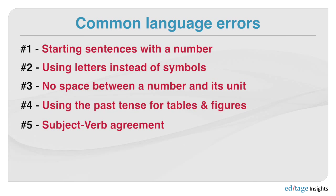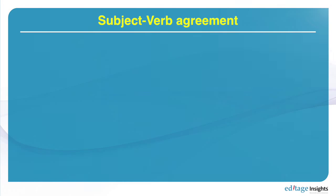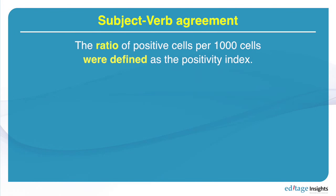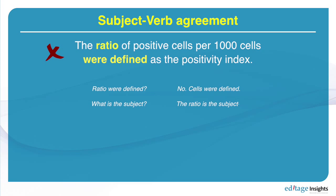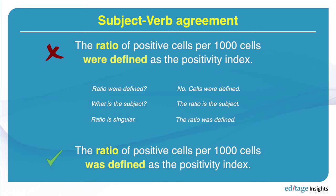Mistake number five is something that especially non-native writers have been facing since studying English: making sure that the subject and the verb agree. If I were to say 'the ratio of positive cells per thousand cells were defined as the positivity index' — 'cells' looks plural, so 'cells were' seems right, but cells is not the subject. The ratio is the subject. So: 'the ratio of positive cells per thousand cells was defined as the positivity index.' The subject and verb need to match.